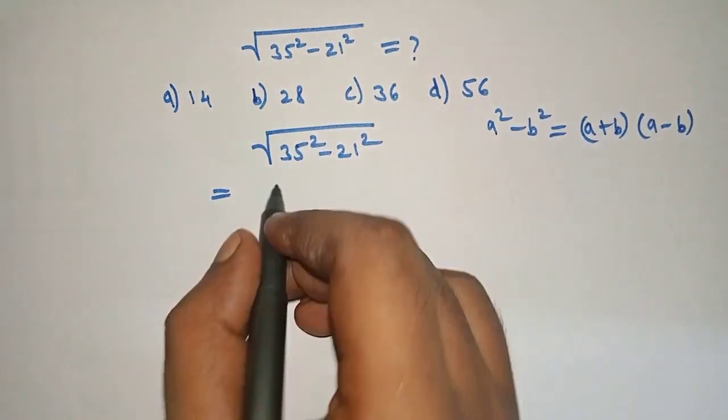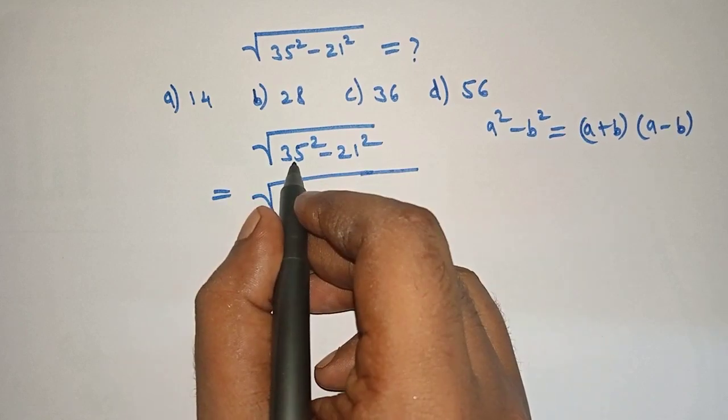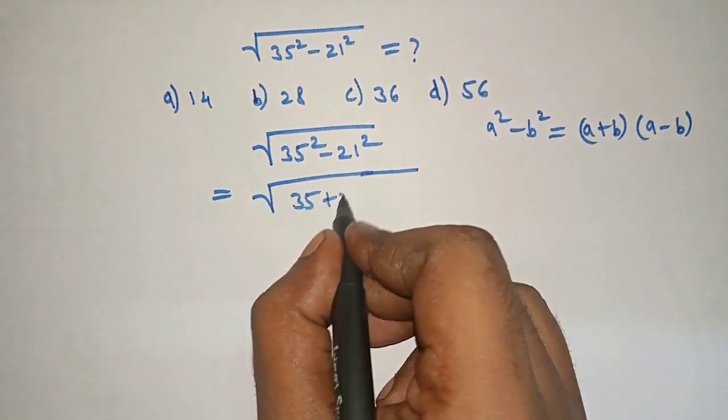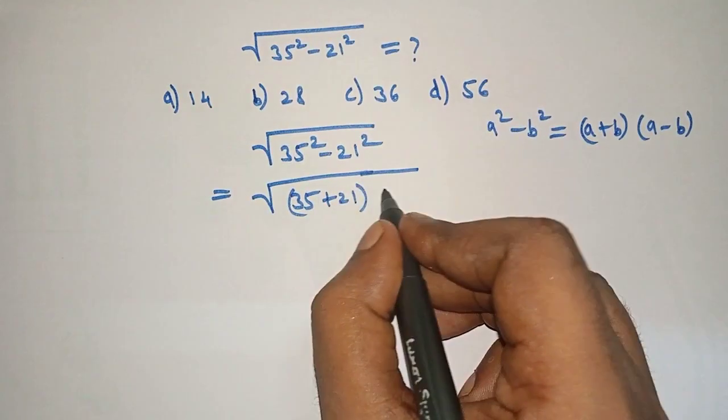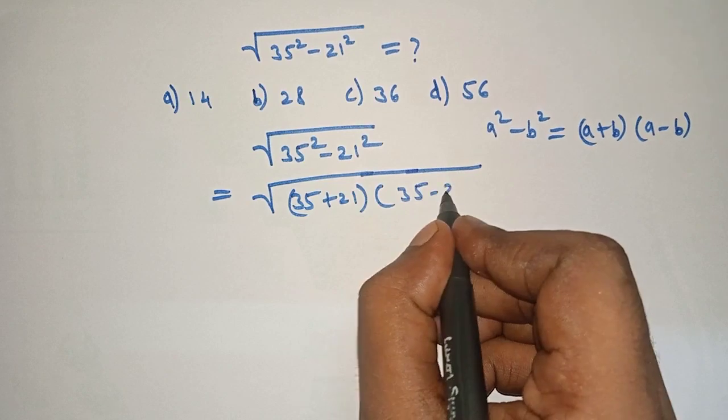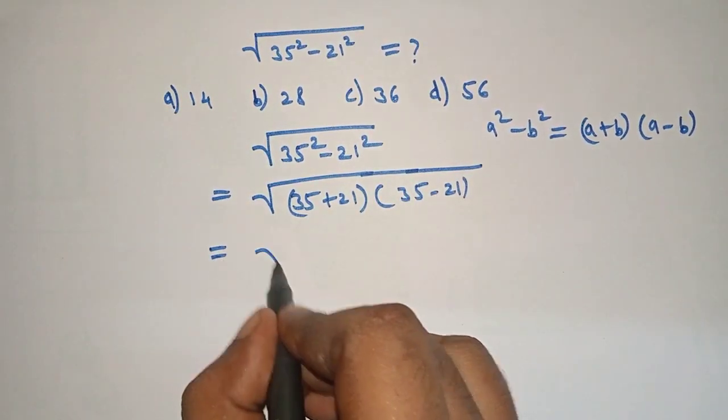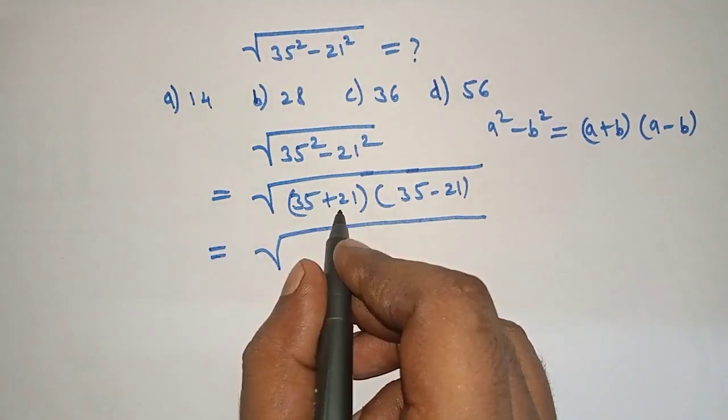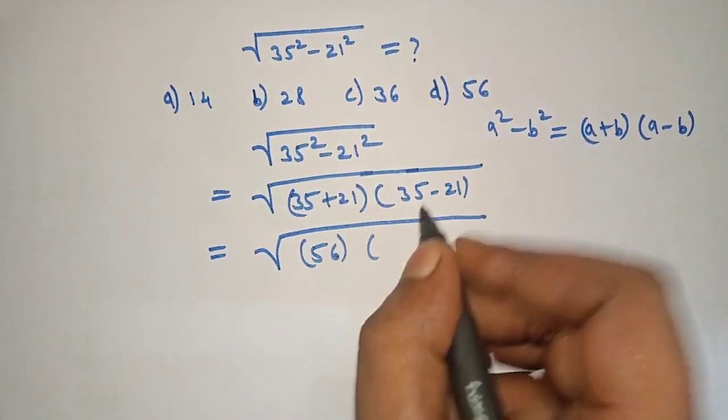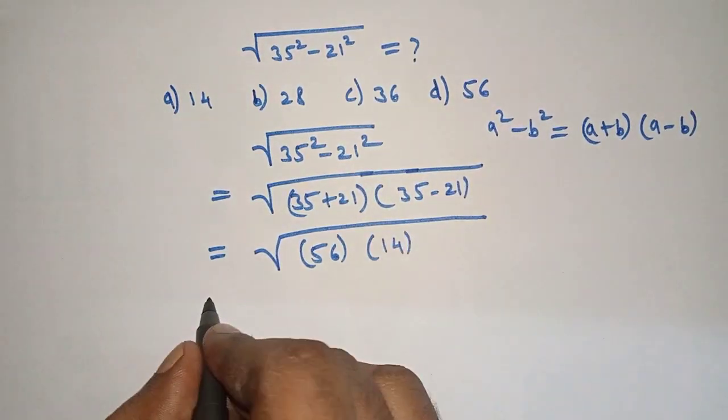Square root of a plus b, 35 plus 21, into a minus b, 35 minus 21, is equal to square root of 35 plus 21 is 56 into 35 minus 21 is 14.